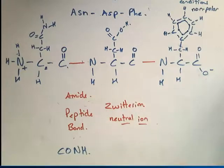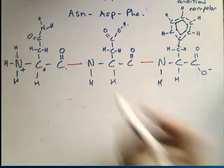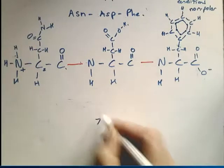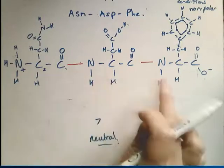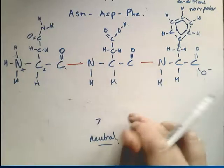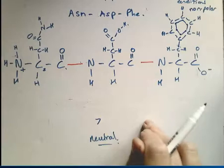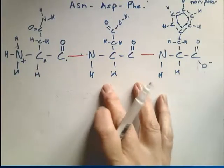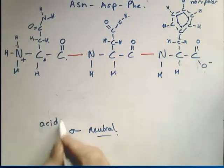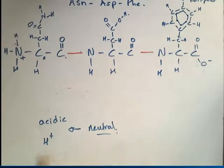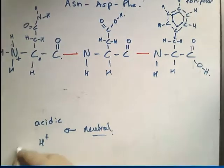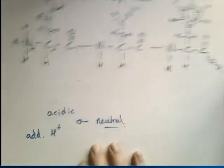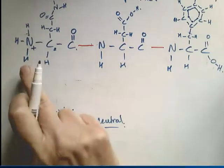Under basic conditions, the pH scale helps us understand: pH 7 is neutral, but the neutral zwitterion doesn't necessarily form at pH 7 — it depends on the side chains. If we make it more acidic, there are extra H+ ions in the environment, so we add the hydrogen back to wherever it was lost from. Adding H+ means the whole molecule becomes positively charged.